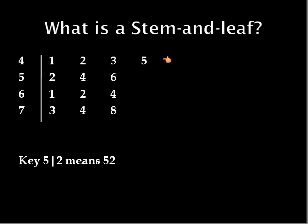43, and 45. The second row represents the numbers 52, 54, and 56 and so on. So that's basically what a stem and leaf plot is.